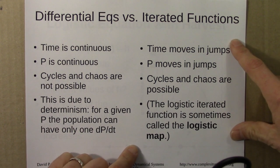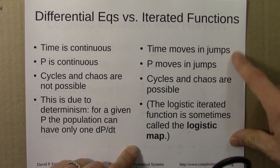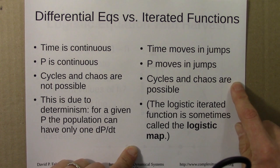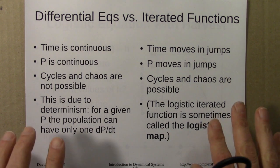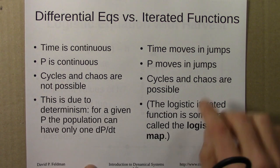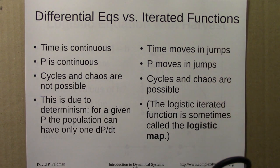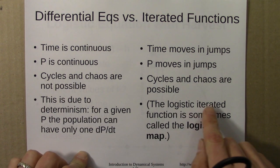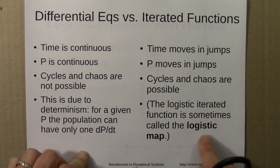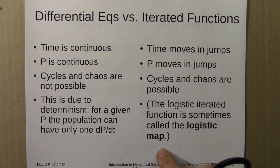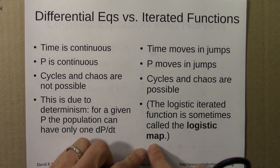For the iterated functions studied in unit 3, cycles and chaos are possible. Both the differential equation and the iterated function are sometimes called the logistic equation. But the iterated version is often called the logistic map. The picture here is that the function maps the unit interval to itself.